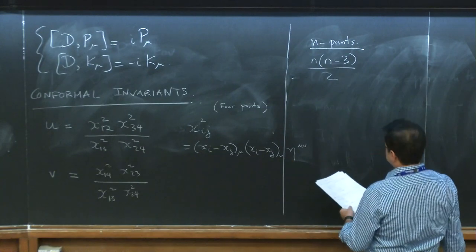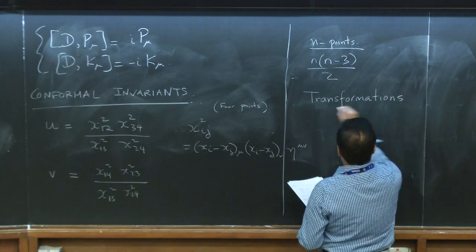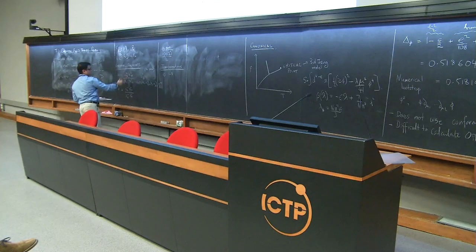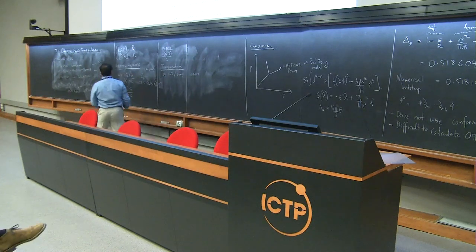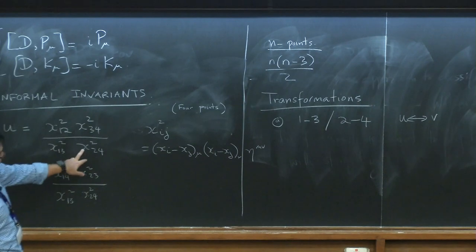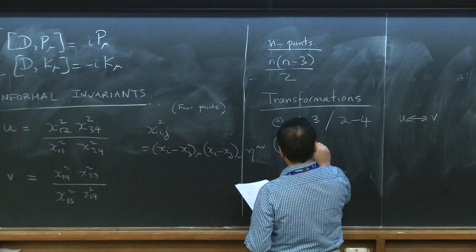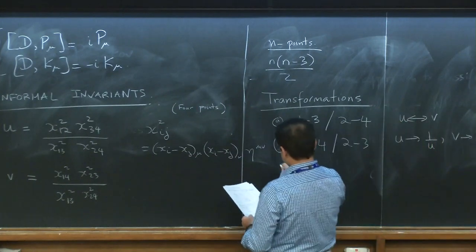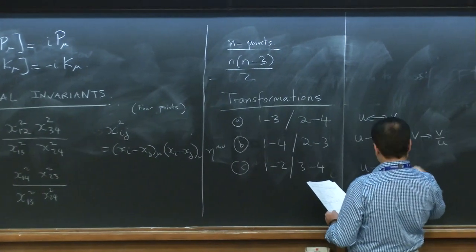There are some useful symmetry transformations for u and v. If you interchange positions one and three, or two and four, then u and v exchange themselves. If you interchange one and four, or two and three, then u goes to 1/u and v goes to v/u. And if you interchange one and two, or three and four, then u goes to u/v and v goes to 1/v.